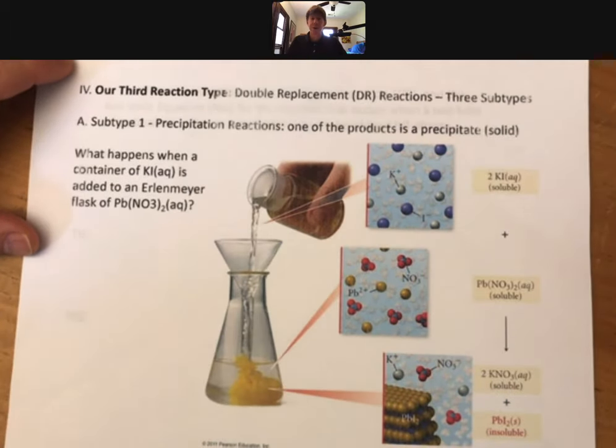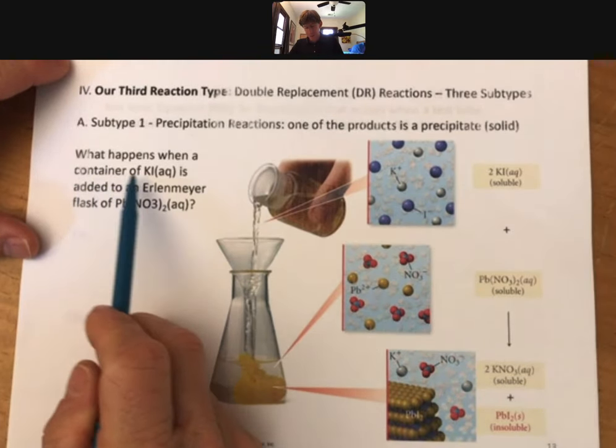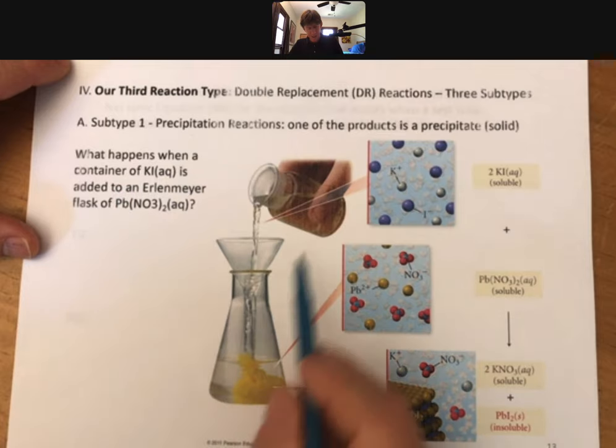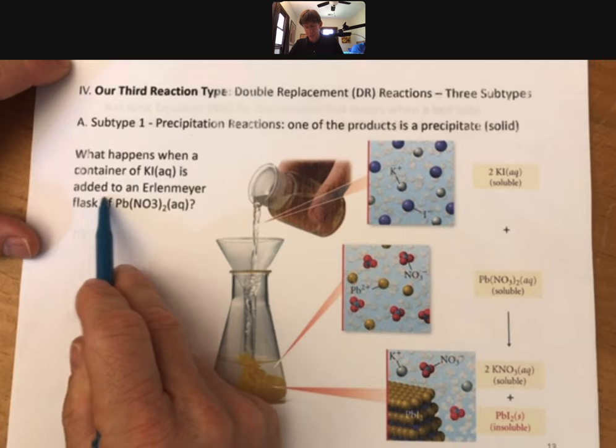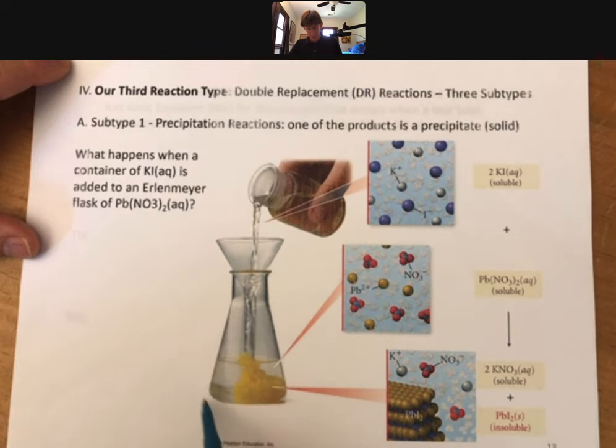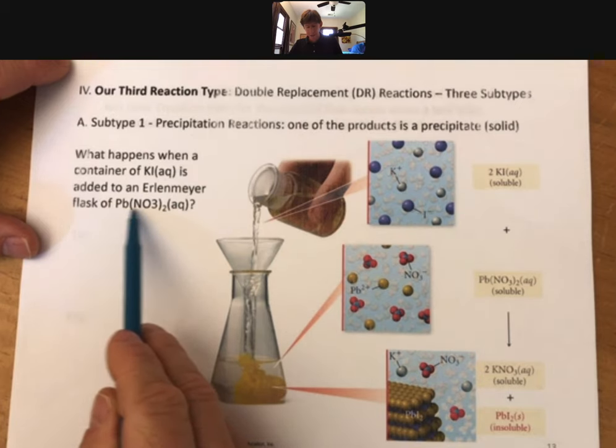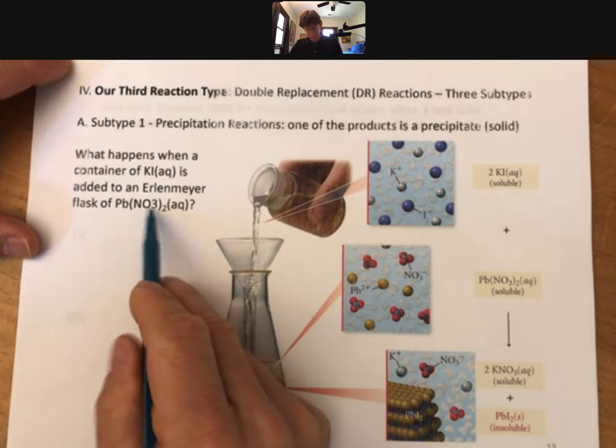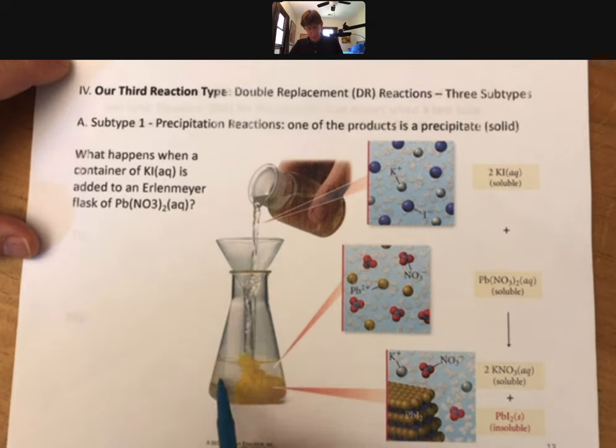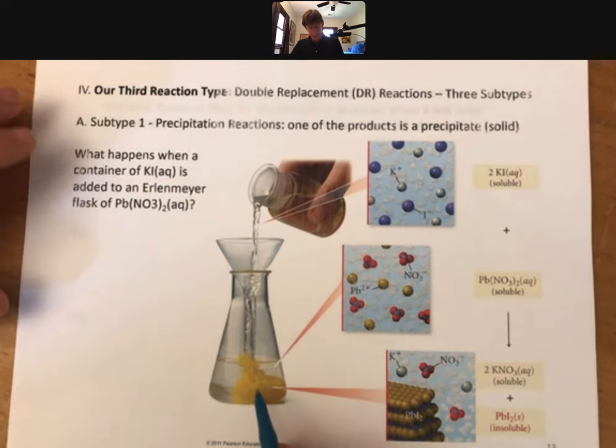The question is, what happens when a container of potassium iodide - that's going to be this container right here which is aqueous - is added to an Erlenmeyer flask, which is this name of this flask here, with a funnel of lead(II) nitrate? And that should be subscripts.